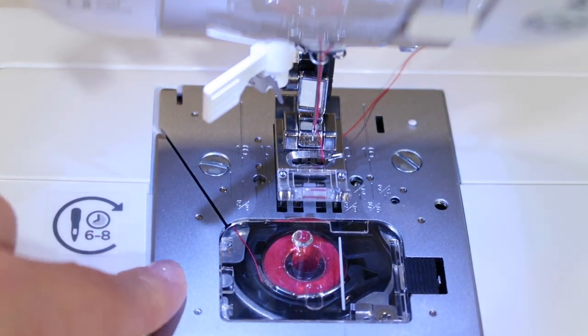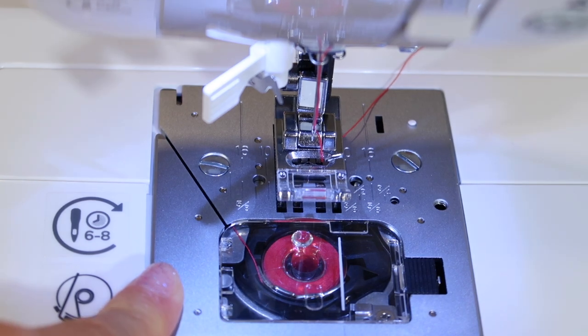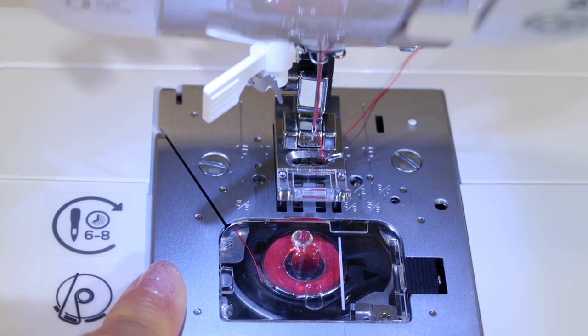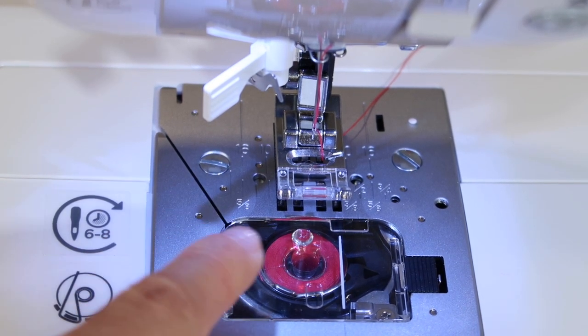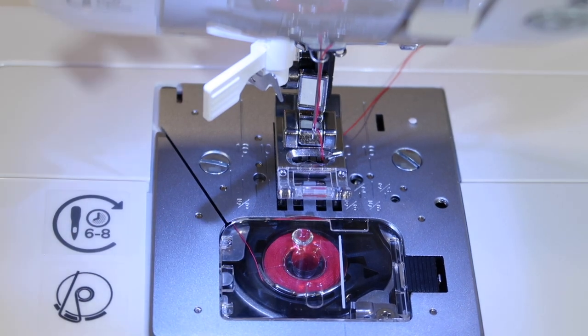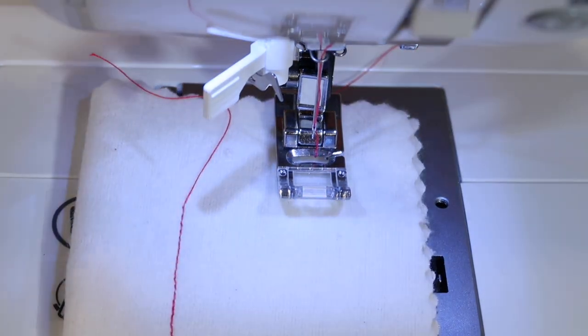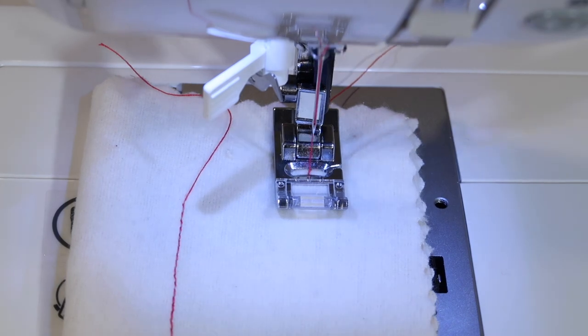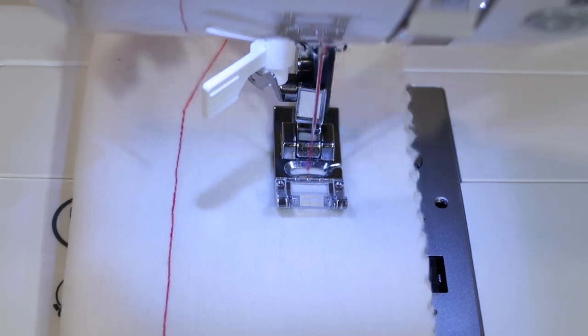So if you remember on previous machines having to bring your bobbin thread up, you don't actually need to do that on this machine. Just put your fabric underneath your foot and start to sew. This way, the thread is long enough to start stitching immediately.